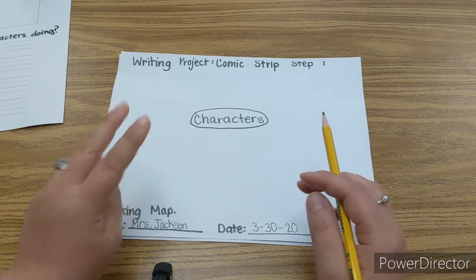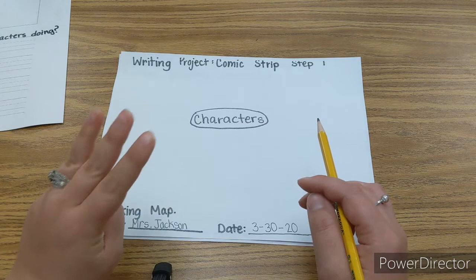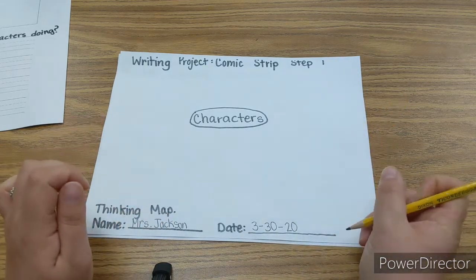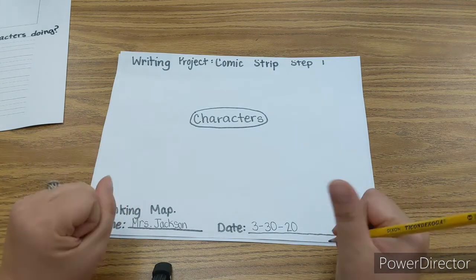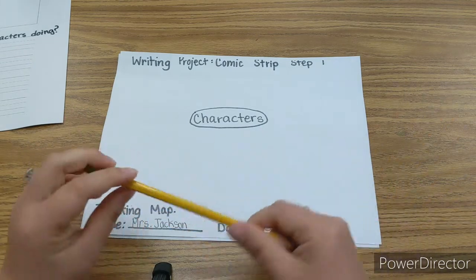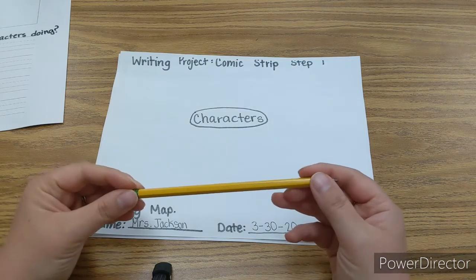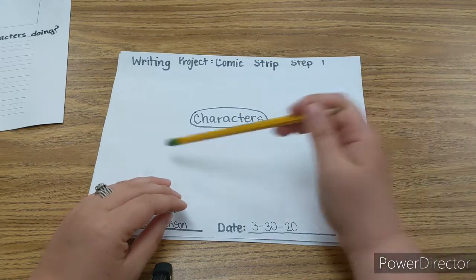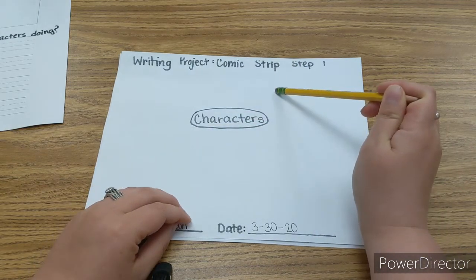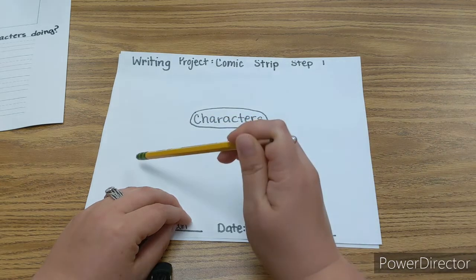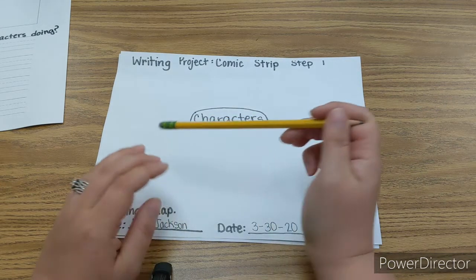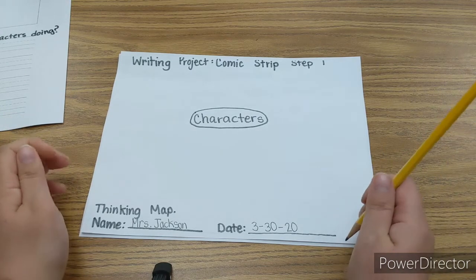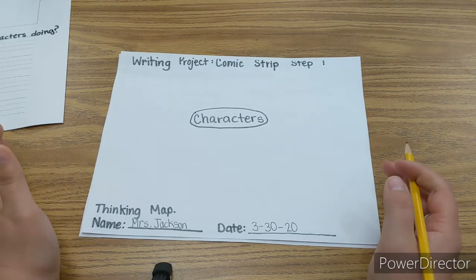You're going to be picking two or possibly three characters to put on your thinking bubble. For example, I had another scholar send me a picture already, and she had her character bubble that she made. She had three characters — she wrote 'me,' she wrote 'Raelynn,' and she wrote 'Wonder Woman.' That's perfect. That's going to be her three characters. Everybody's three characters are going to be different.